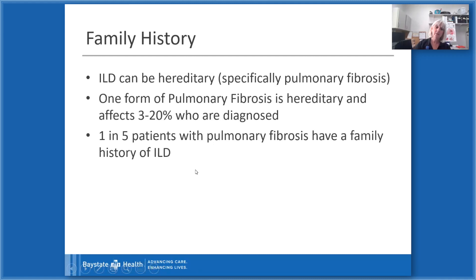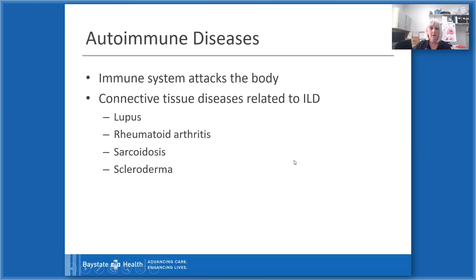The next category is family history. Interstitial lung disease can certainly be hereditary — specifically pulmonary fibrosis, which is one of the types of interstitial lung disease. One form of pulmonary fibrosis is hereditary and affects about 3 to 20% of patients diagnosed with ILD. One in five patients with pulmonary fibrosis have a family history of ILD.